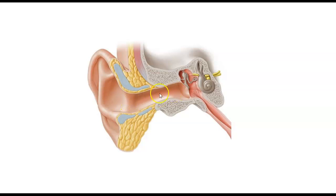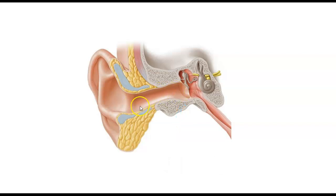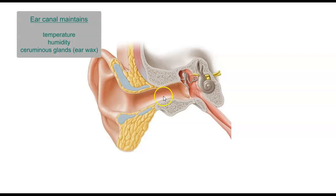The external auditory canal is about an inch and a quarter long and about a quarter inch in diameter. It is primarily responsible for directing airborne sound waves towards the eardrum. It also has a couple of other main functions, one of which is to maintain temperature and humidity, which is very important for maintaining the elasticity of the tympanic membrane.